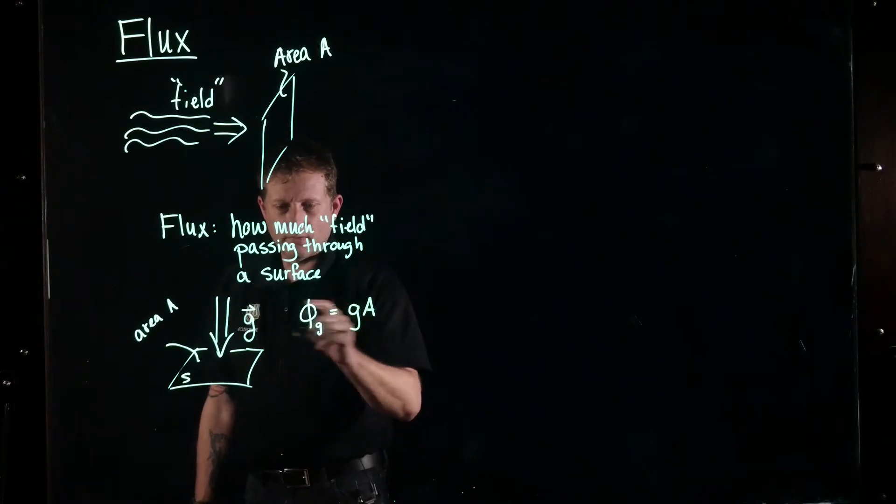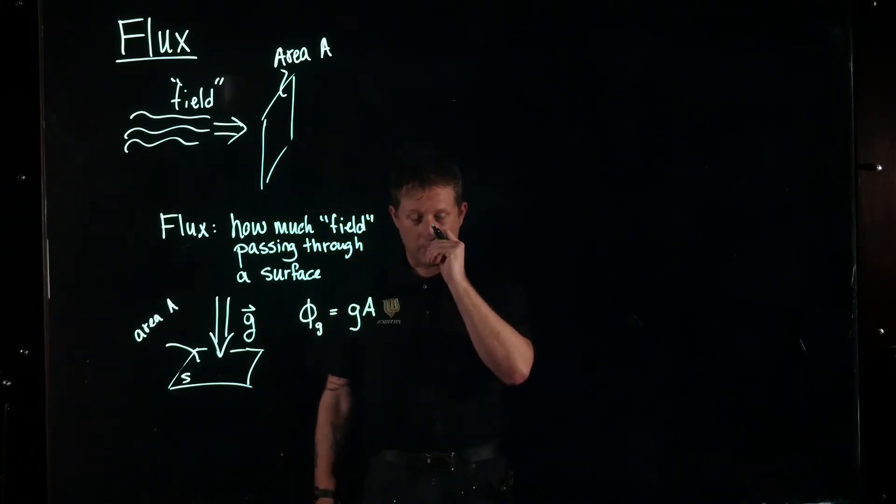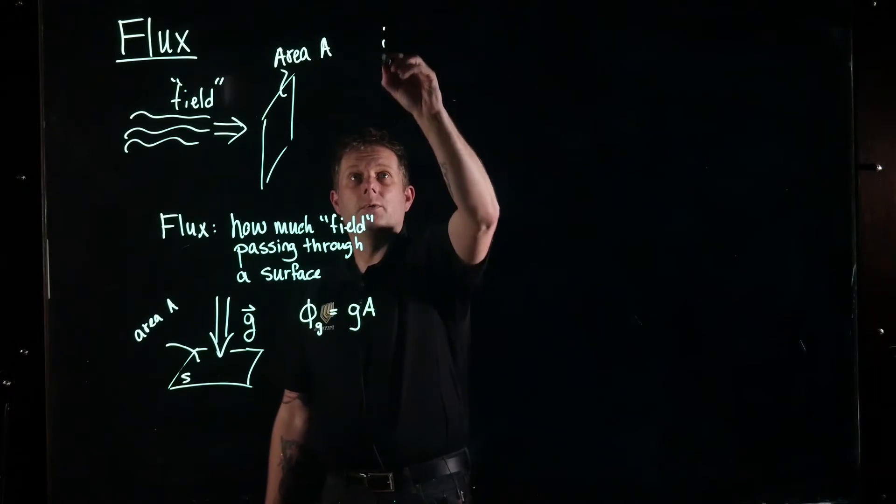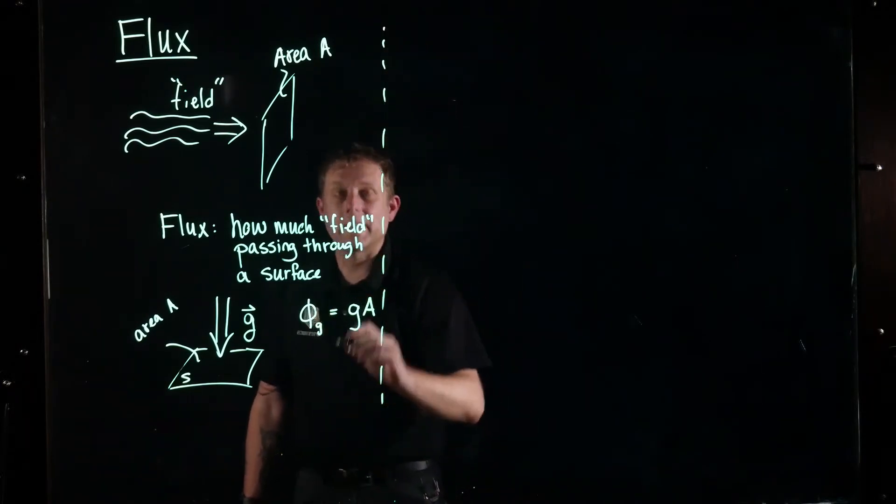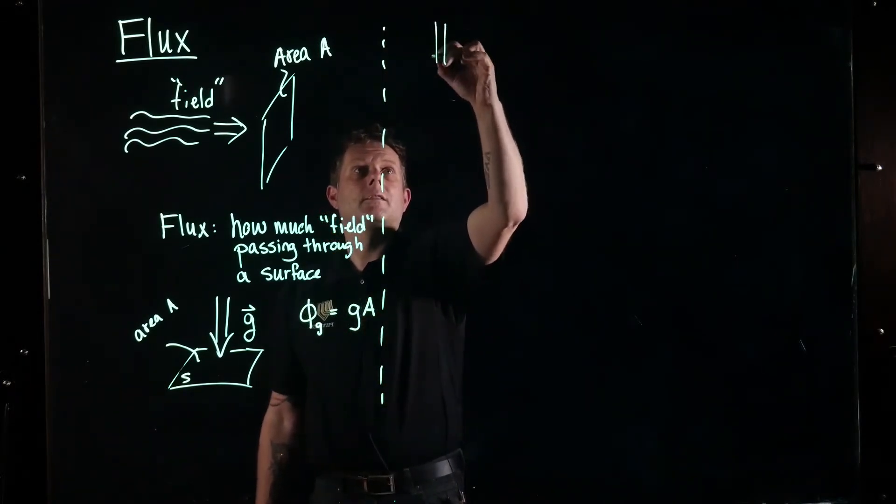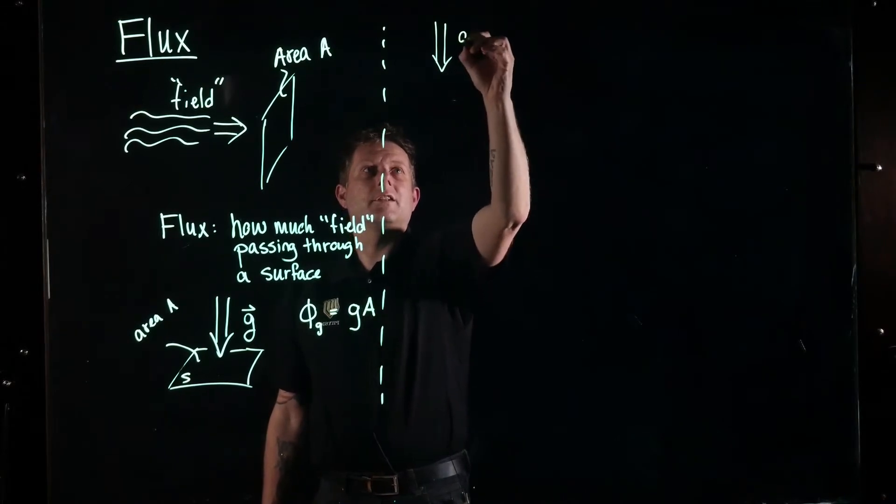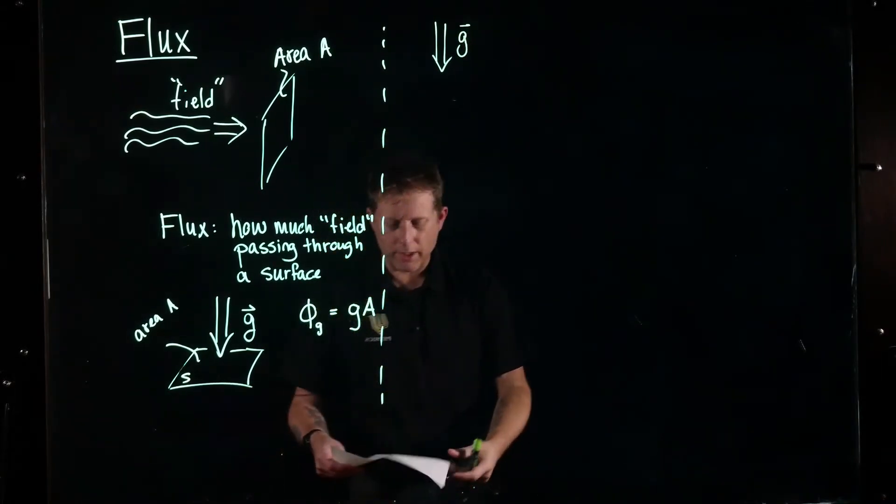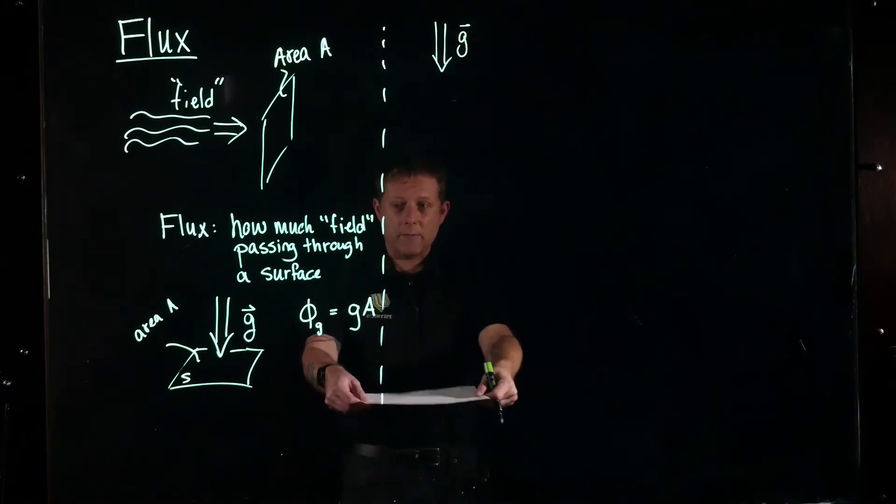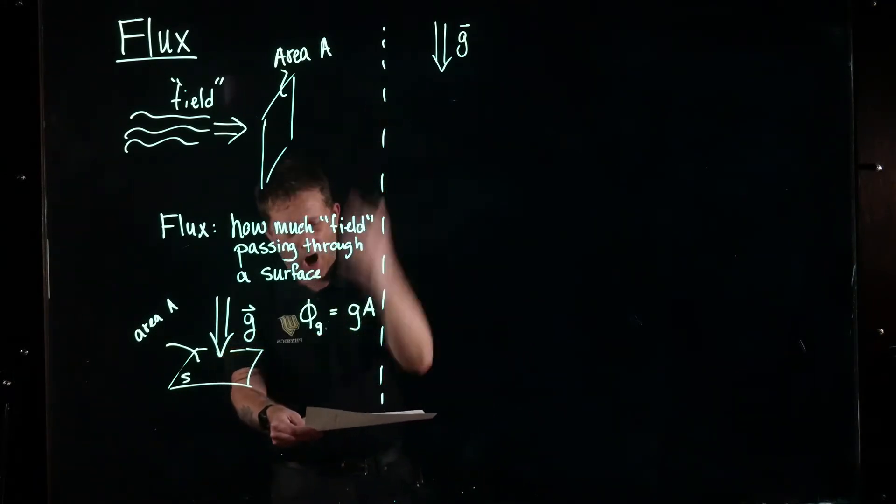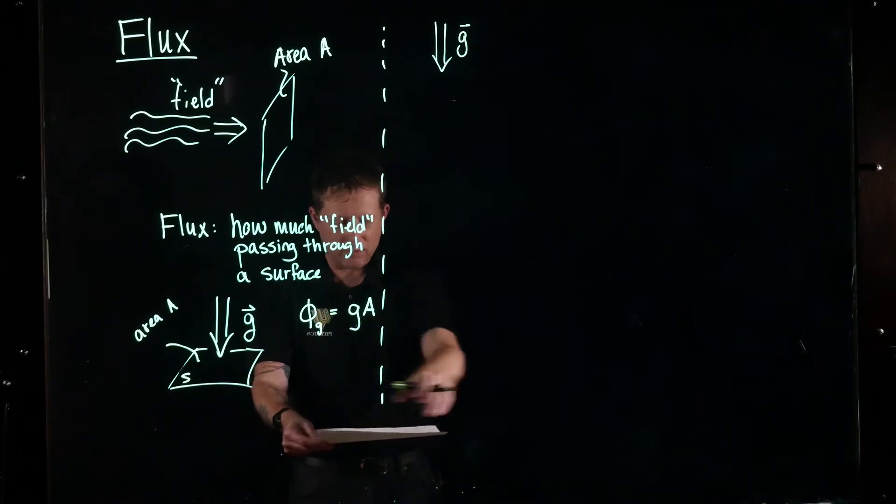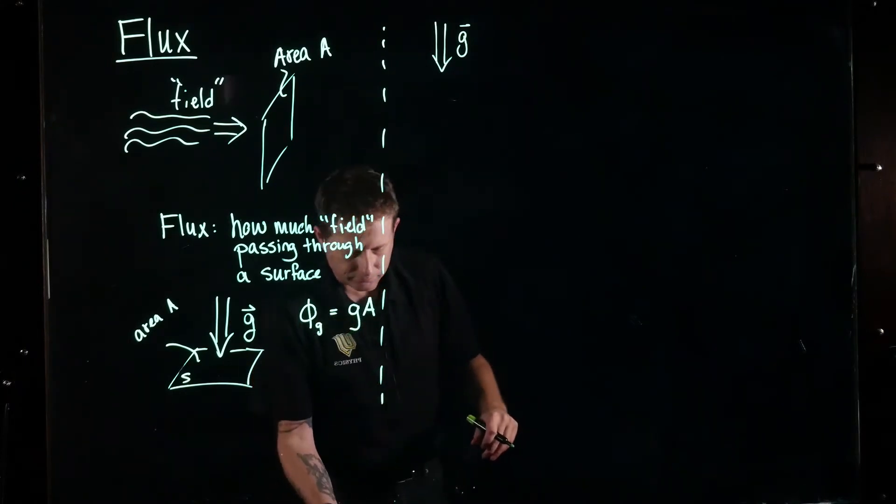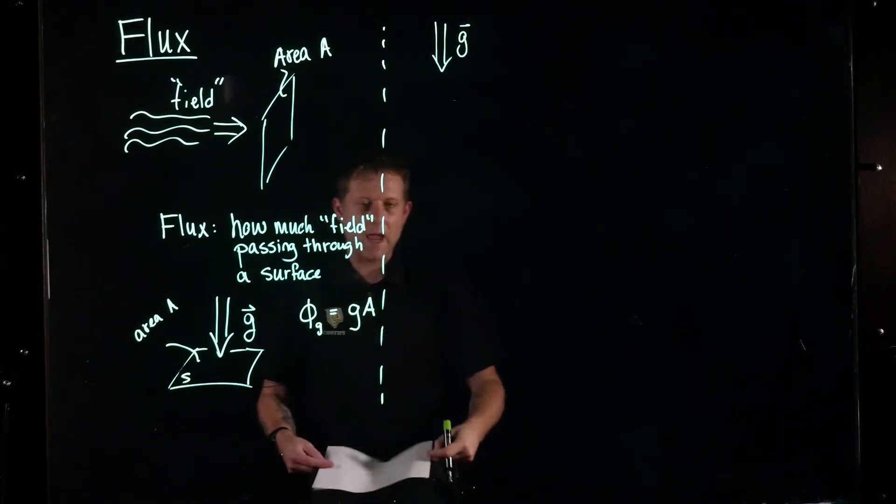So that'll give us how much field is passing through that surface. We could also do exactly the same field, the gravitational field. But instead of having this paper laying flat, let's say gravitational field just slamming down through this here. Oh, there's so much field passing through the surface here.